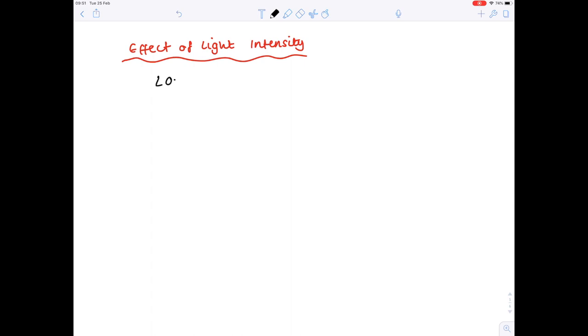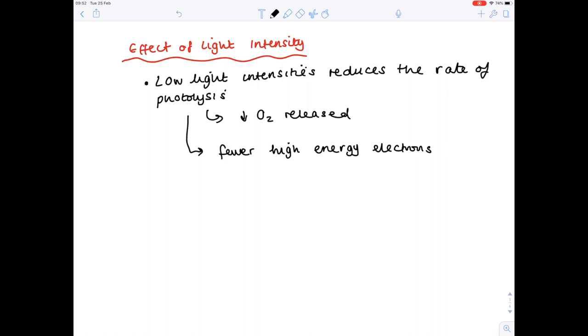So what happens at low light intensities? Well, again you see a reduced rate of photolysis. Remember that oxygen is produced as a result of photolysis, so we'll see decreased oxygen released. Now reducing the rate of photolysis means that we have fewer high energy electrons, and these high energy electrons are needed to convert that carbon dioxide into carbohydrates such as glucose.